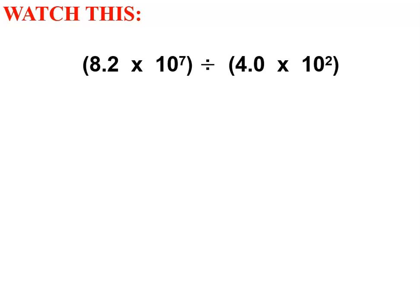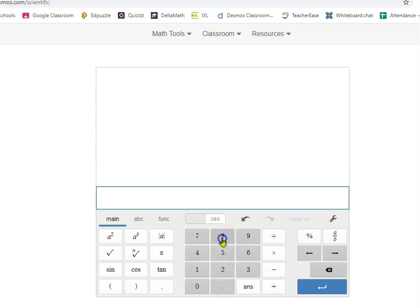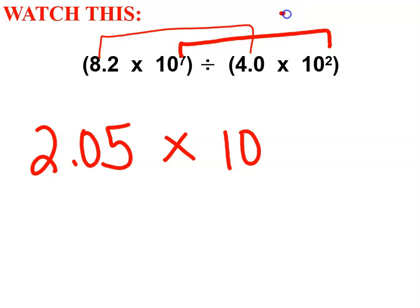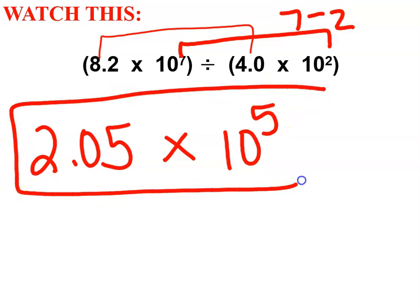I'm definitely going to want to use a calculator for this. So I'm going to divide 8.2 divided by 4.0. So let's use Desmos. And let's do 8.2 divided by 4.0. The answer is 2.05. So 2.05 is my new coefficient. A times sign and a 10 is always needed. But this time we're going to subtract our powers. 7 minus 2 is 5.